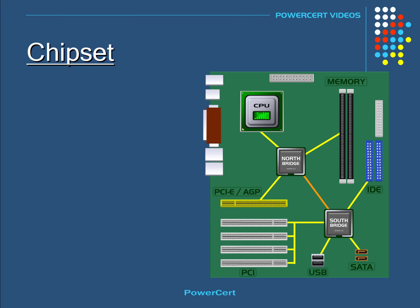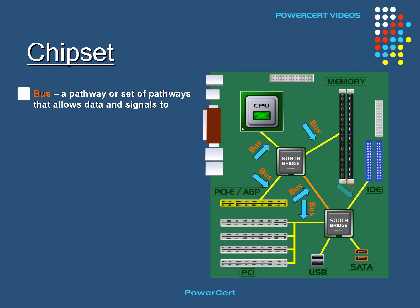Both the North and South Bridge make these connections to various parts of the motherboard using pathways called a bus. A bus is simply a set of pathways that allows data and signals to travel between components on the motherboard. The motherboard contains several kinds of buses that vary in speed and bandwidth.